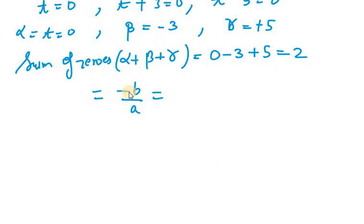Now minus b over a, minus as it is, b in this case is minus 2 and a is 1. So minus minus gets cancelled out, we are left with 2. So hence verified for sum of zeros.